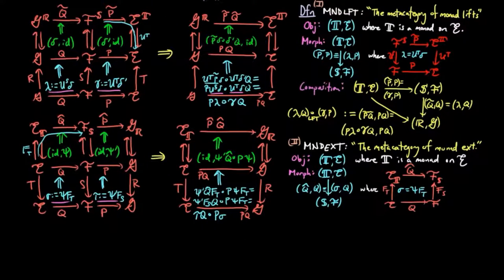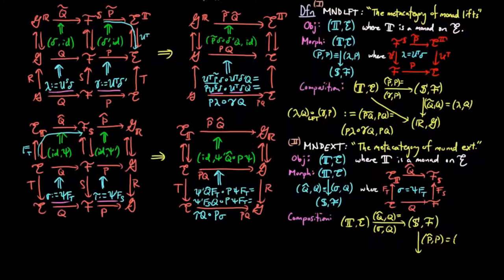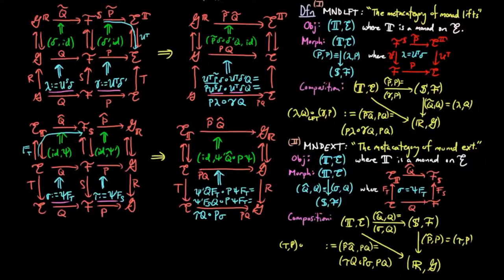We also have two equivalent descriptions of composition in this category, where q-hat-q, which is equivalent to sigma-q, followed by p-hat-p, which is equivalent to tau-p, is p-hat-q-hat-p-q, which is equivalent to tau-q-p-sigma-p-q. And by the same logic as for monad lifts, this is a well-defined categorical structure.